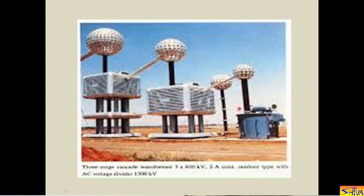Now let us see the practical cascaded transformers used in outdoor as well as indoor applications. This outdoor unit shows the first unit kept on the ground, the second unit isolated from the ground and mounted on insulators, and the third unit also mounted on insulators. The output of the first unit is taken through a bushing, as is the output of the second unit. Outputs are taken through bushings and this arrangement is used to avoid corona.